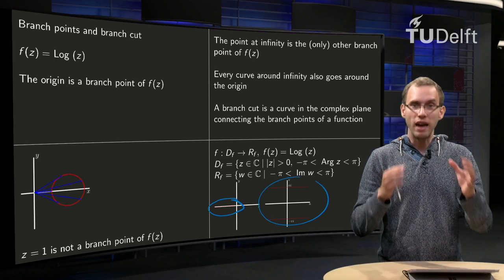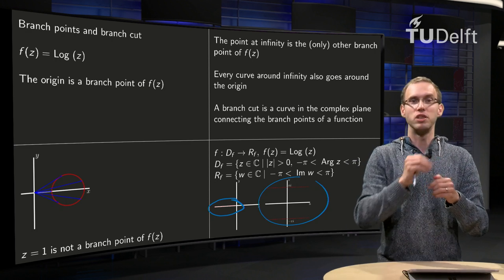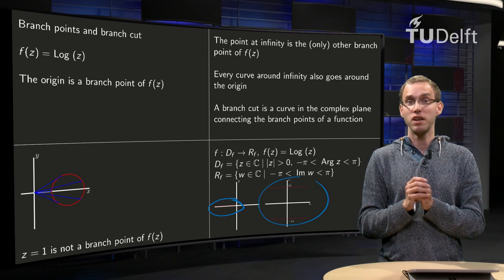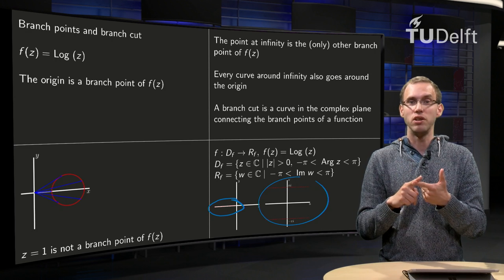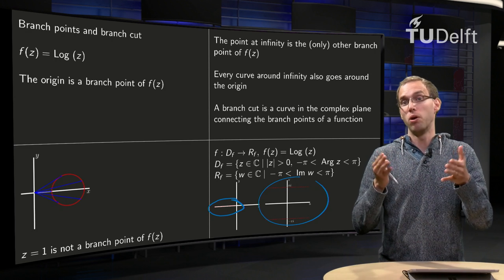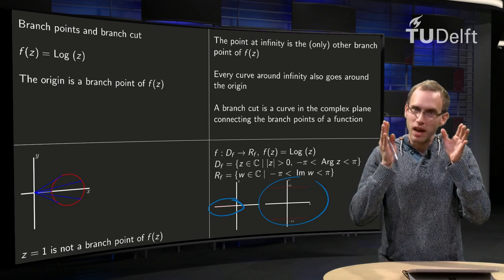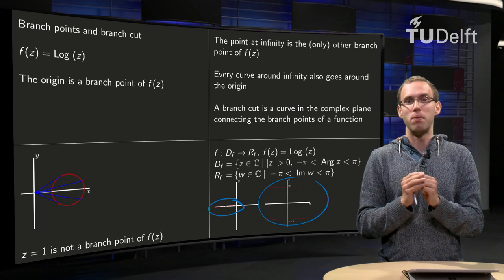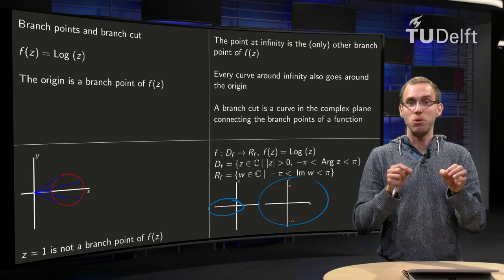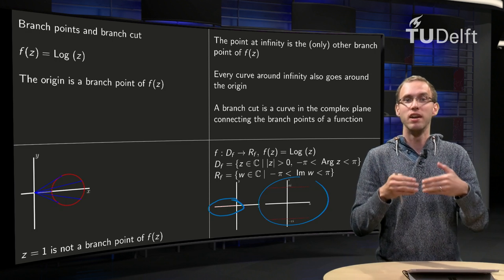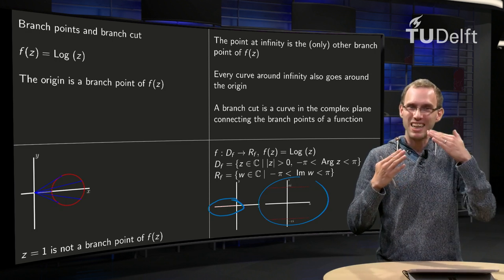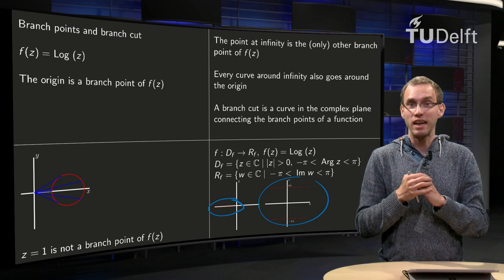And now we have made our function continuous, because you cannot travel around the origin, you cannot travel around the point at infinity anymore. So our function log z is now univalued and continuous, and the only price we have to pay is that we have to exclude a part of the real axis.